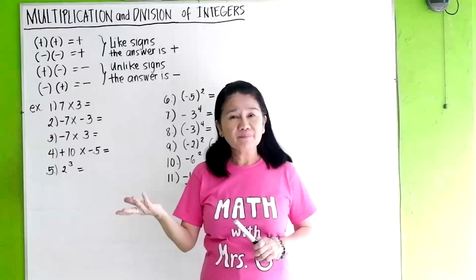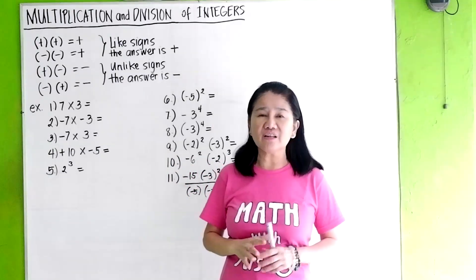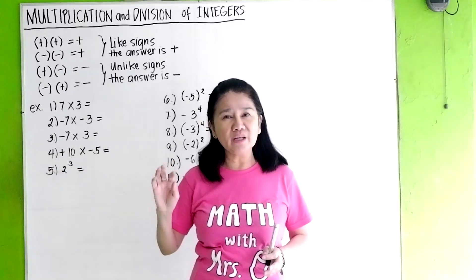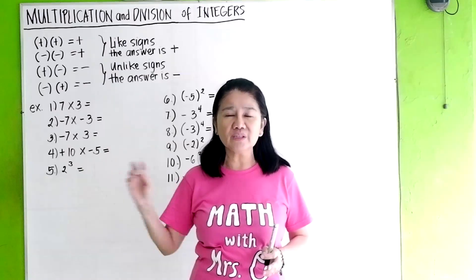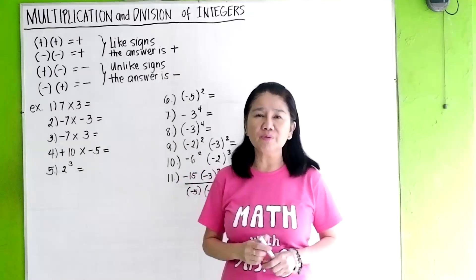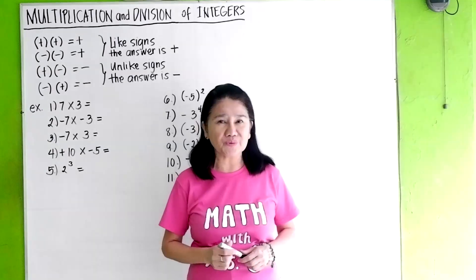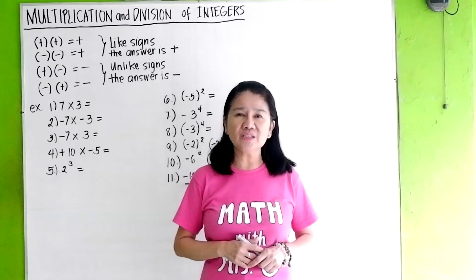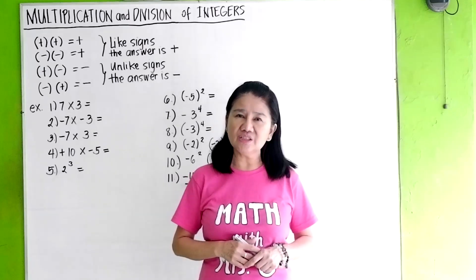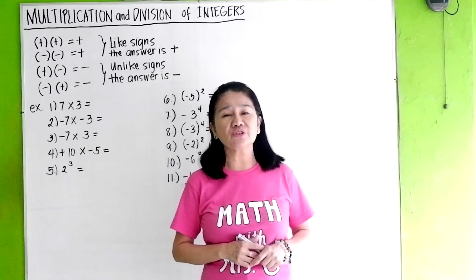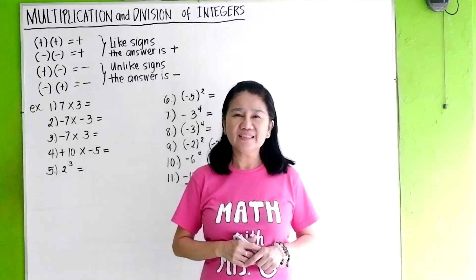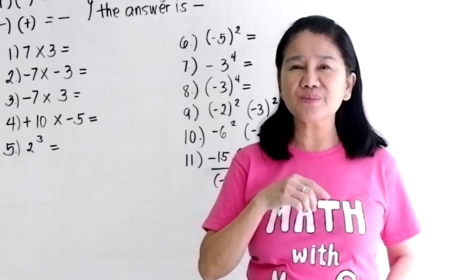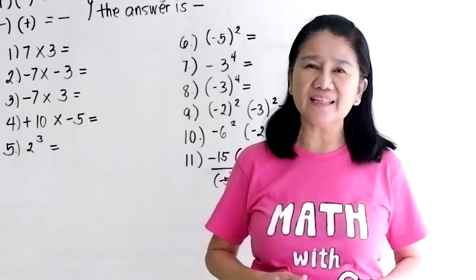We've learned in my previous video that the integers are the set of negative counting numbers — negative 1, negative 2, negative 3, and so on — zero, and positive counting numbers: 1, 2, 3. Please watch my previous video about addition and subtraction of integers. Please don't forget to subscribe — press the red subscribe button and the bell button.